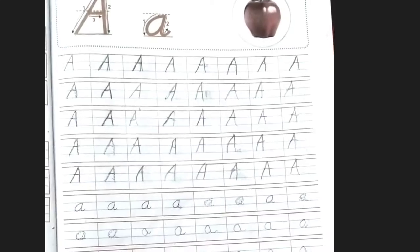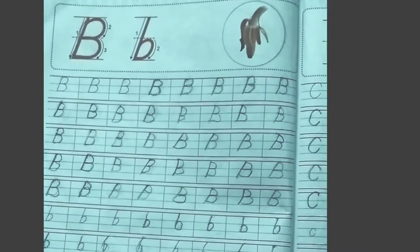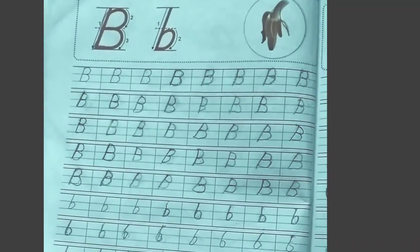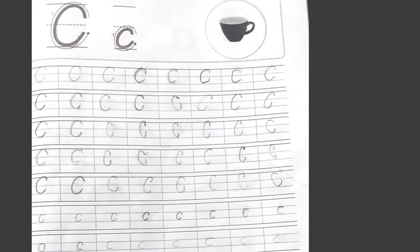Capital A and small a, A for apple. Capital B and small b, B for banana. Capital C and small c, C for cup.